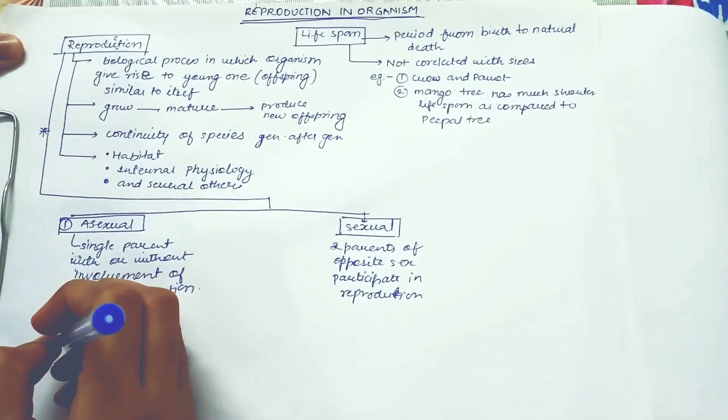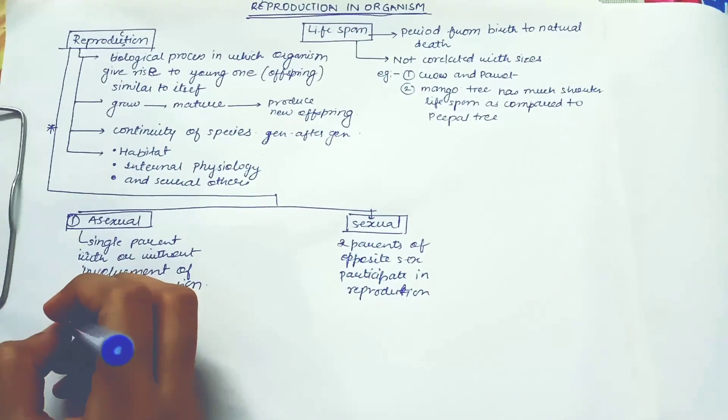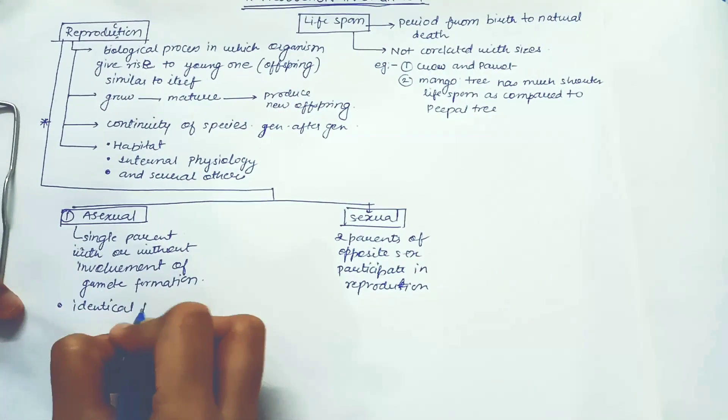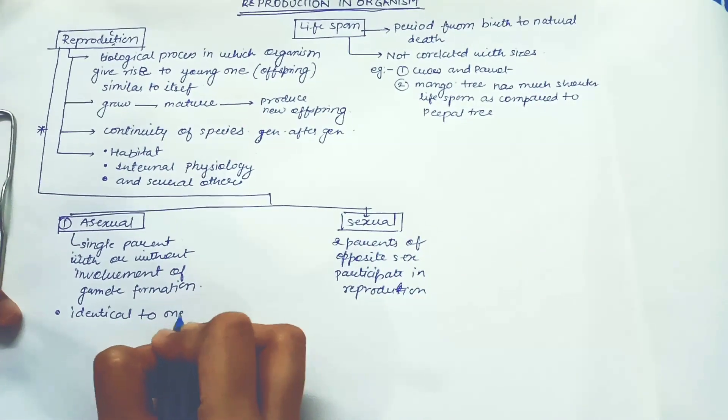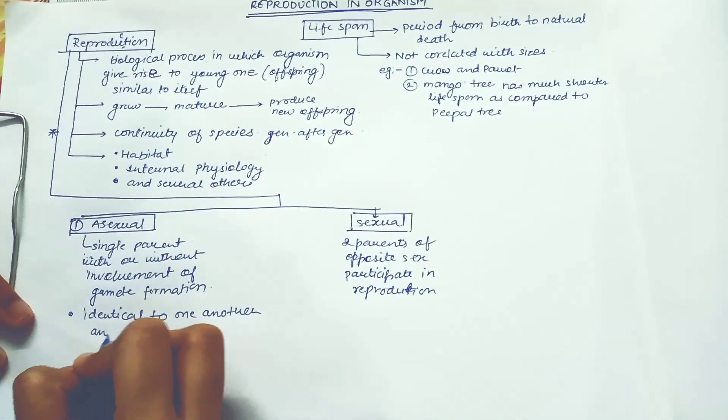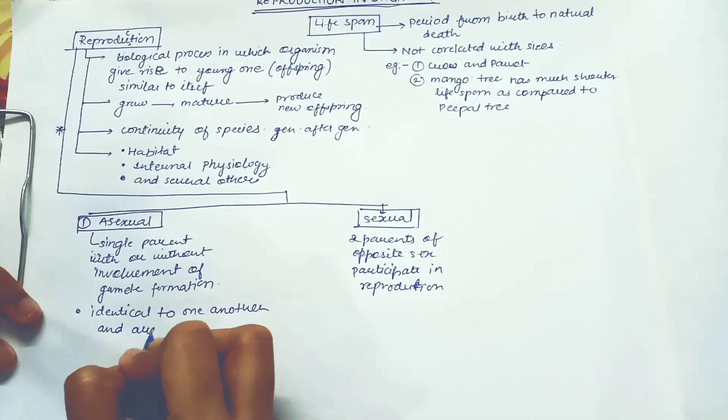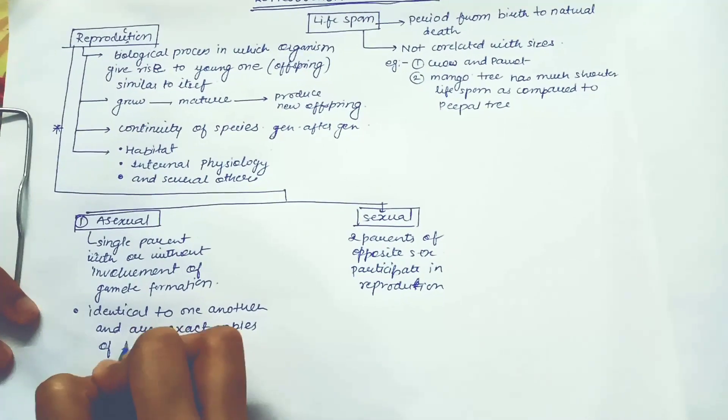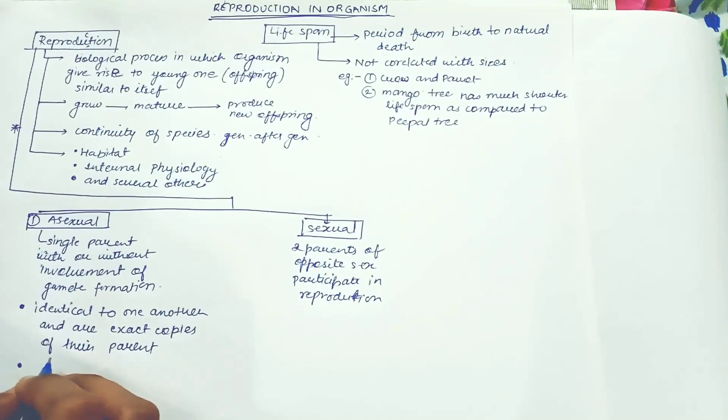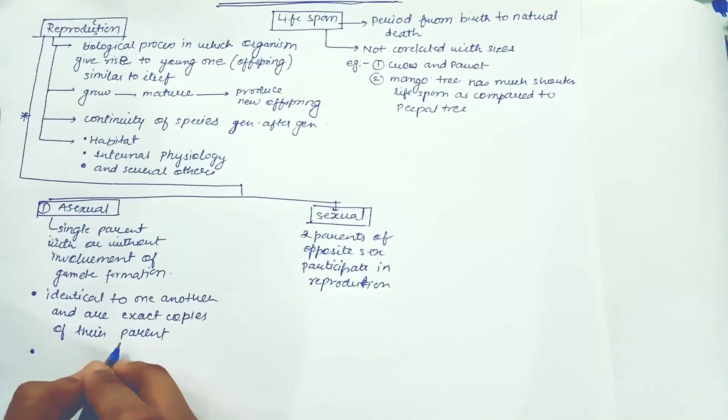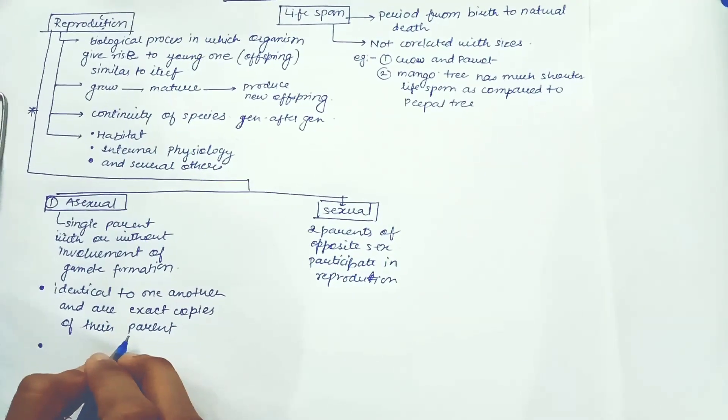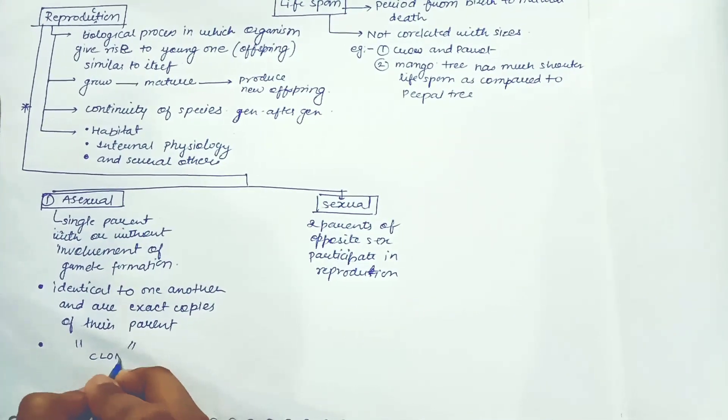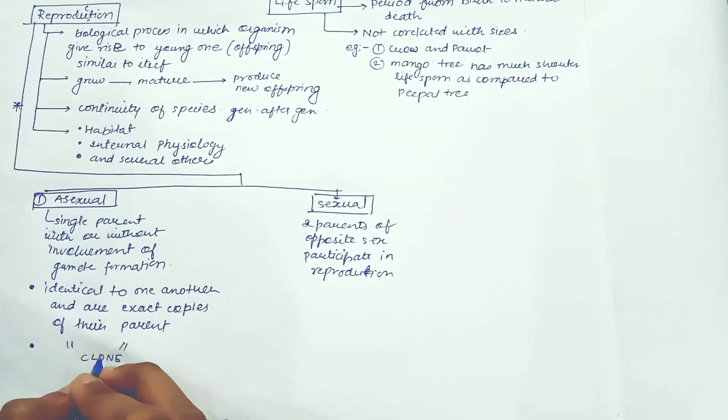So in asexual reproduction, the offspring which is produced is identical to one another and are exact copies of the parent. And such identical offspring which is morphologically and genetically similar is known as clone. What it is known as, clone, is very important.